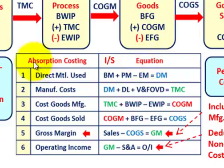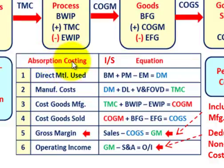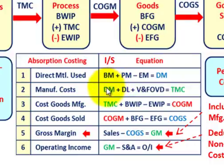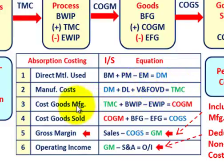For our income statement — gross margin uses absorption costing, meaning all manufacturing costs are included in inventory. To determine direct material used: take beginning materials, add purchases for the period, subtract ending materials. That gives direct materials used. For total manufacturing costs, we take those direct materials, add direct labor, and add both variable and fixed factory overhead.